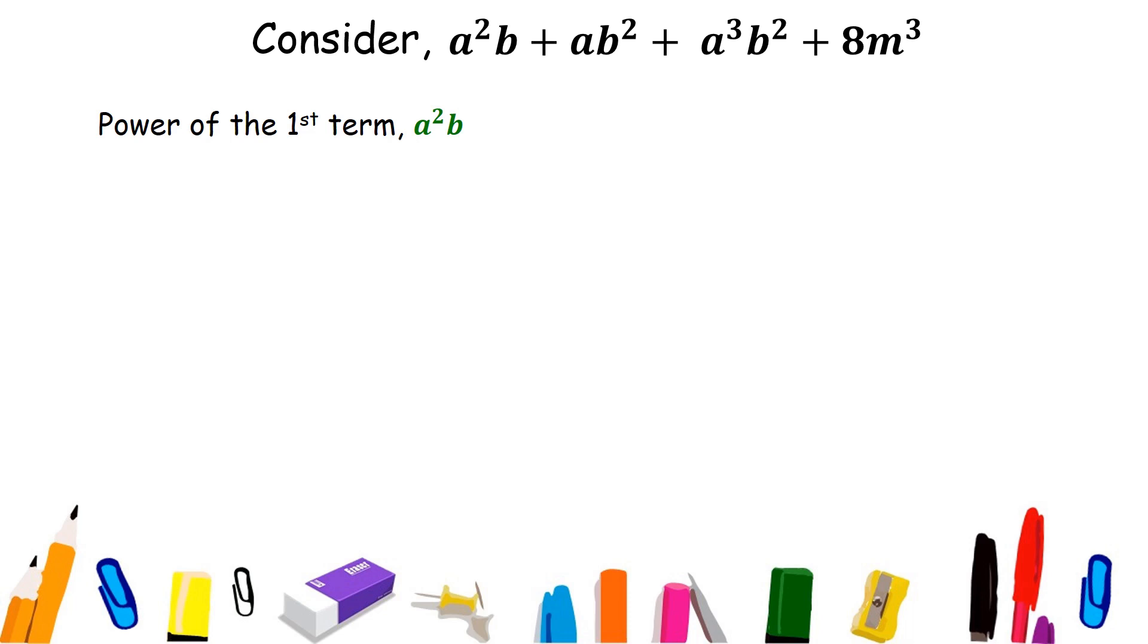In the first term a square b, power of a is 2 and that of b is 1. So, the power of a square b is 2 plus 1, that is 3.